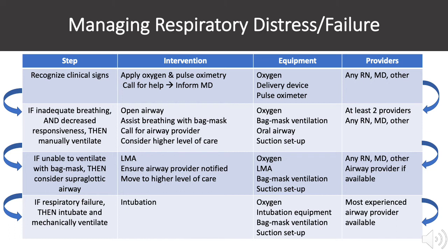Oxygen flows on the bag mask device should be at 15 liters per minute. If the provider is still unable to ventilate the patient despite previous interventions and the airway provider has not yet arrived, they should consider inserting a supraglottic airway such as an LMA. Once the LMA, or laryngeal mask airway, is inserted properly, the bag ventilation system can be used to support the patient's breathing.